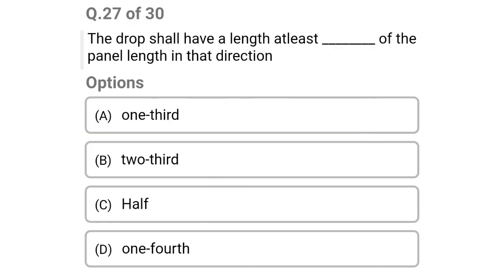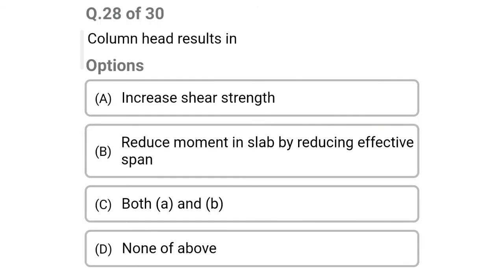Next question: the drop shall have a length of at least how much of the panel length in that direction — option A: one third, option B: two third, option C: half, option D: one fourth. The correct answer is option A: one third.